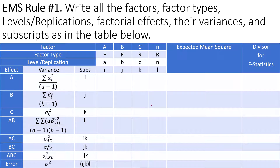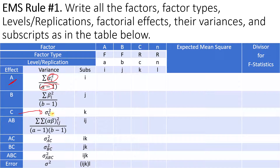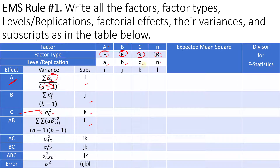The first thing you do is write everything in a table. Factor A is a fixed factor, so the variance component is written as the effect of A squared divided by the degrees of freedom. Factor C is the random factor, so the variance component is simply sigma squared. You write all the subscripts for the effects in this column, along with the factor type — A and B are fixed, C is random, and replication is always random — and their levels: A levels for A, B levels for B, and N replications.